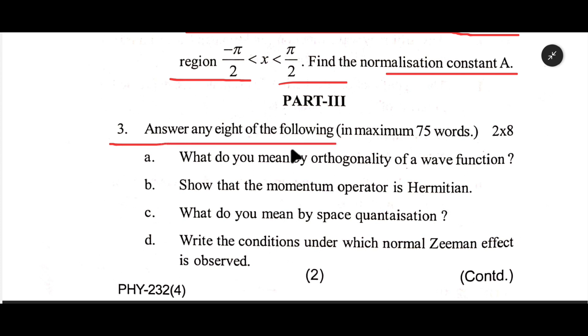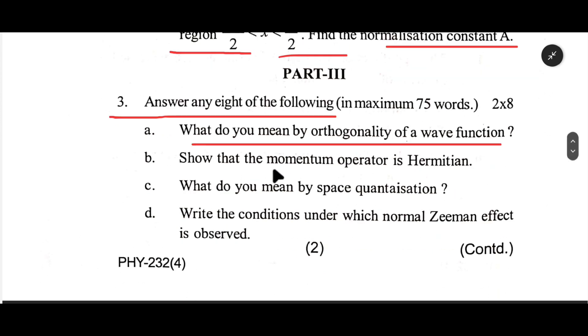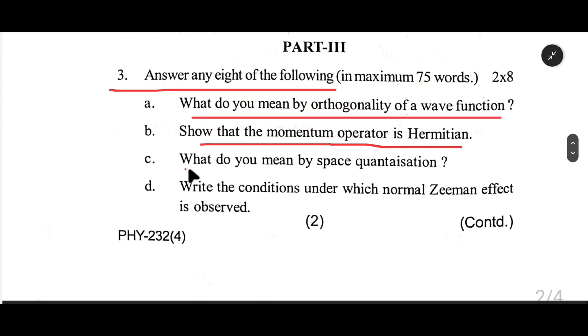Answer any eight of the following in maximum 75 words. a. What do you mean by orthogonality of a wave function? b. Show that the momentum operator is Hermitian.